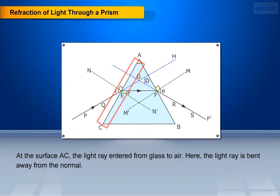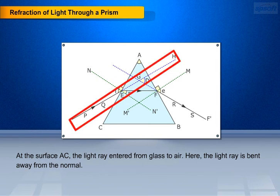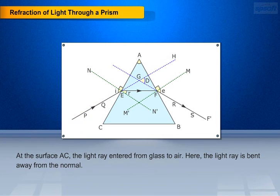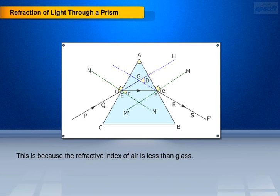At the surface AC, the light ray entered from glass to air. Here the light ray is bent away from the normal. This refraction is because the refractive index of air is less than glass.